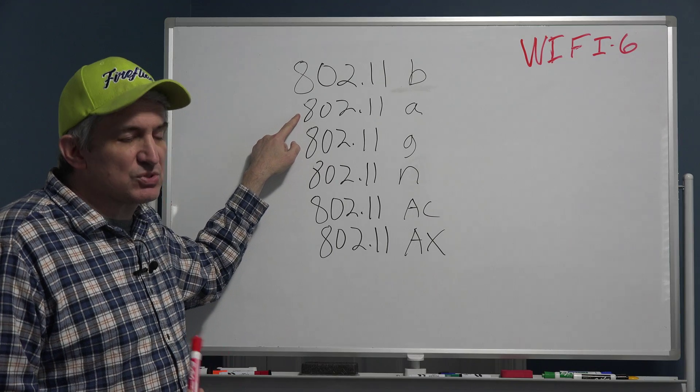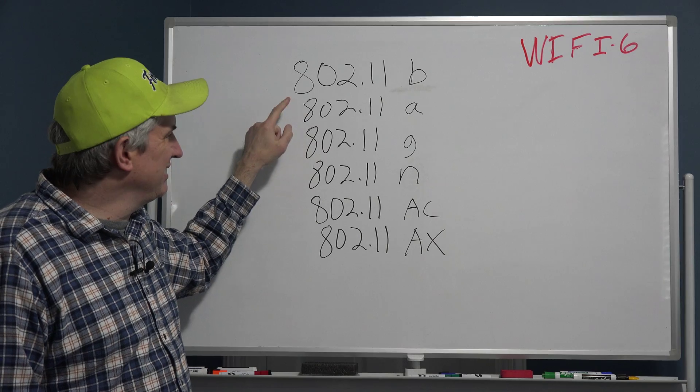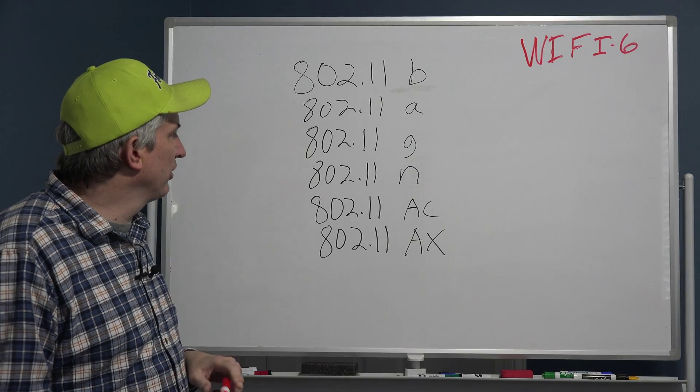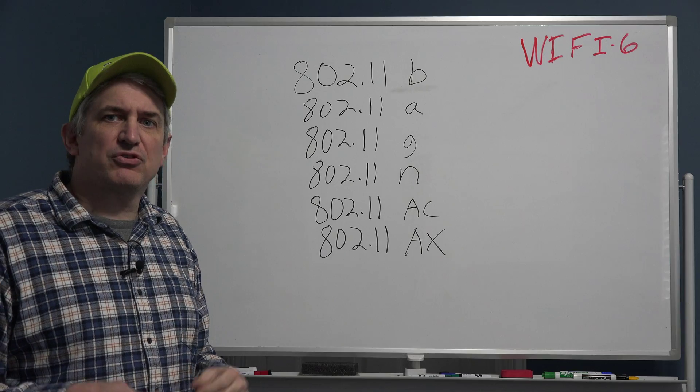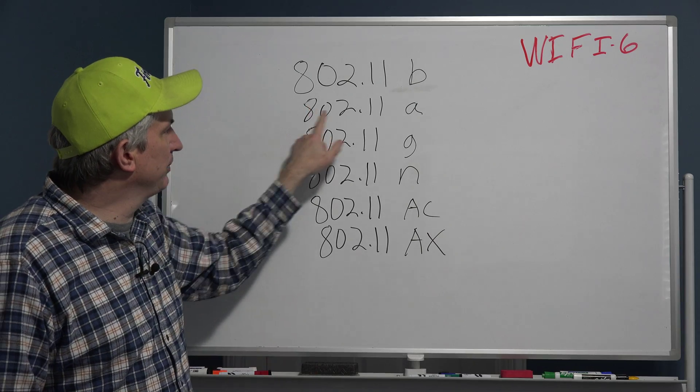802.11a was not widely adopted. It was faster and better, I think it even introduced 5 gigahertz frequency, but due to its cost and its limited adoption, it really didn't take on. So most people probably don't even know about WiFi a or 802.11a.